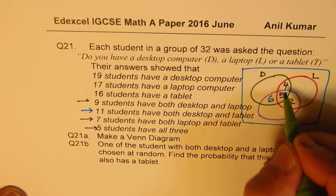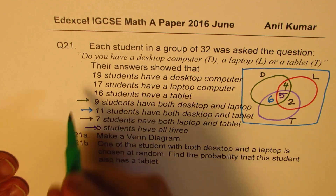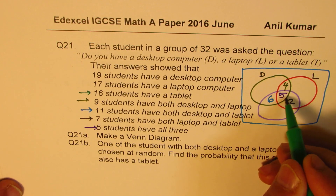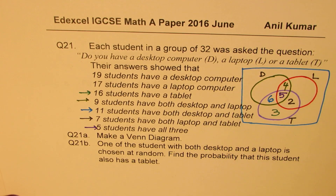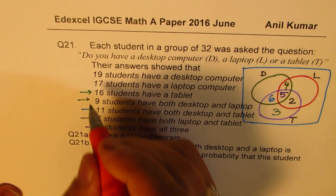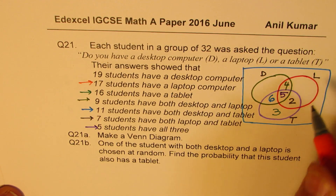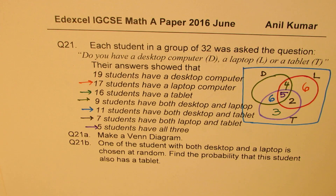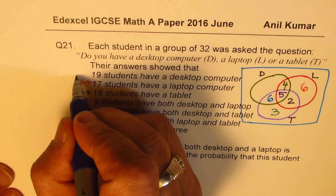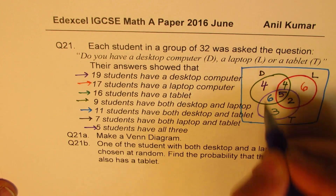Moving outward, 16 students have tablets in total. We already have 6 + 5 + 2 = 13, so 3 are left in the tablet-only region. 17 students have a laptop: 4 + 5 + 2 + 6 = 17 — correct. 19 students have a desktop: 4 + 5 + 6 = 15, so 4 are left in the desktop-only region.